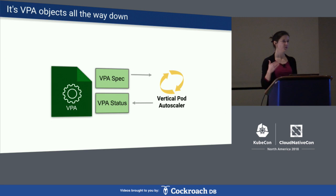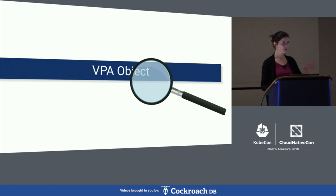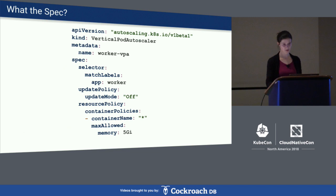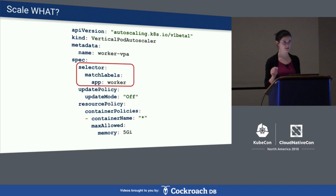All the information about vertical scaling is contained in a VPA object, defined as a custom resource definition. Like most Kubernetes objects, it is divided into spec and status. The spec controls what and how should be scaled, and the status is where the recommendations are actually provided. Let's take a closer look at what it contains.